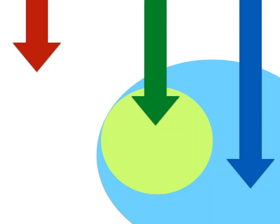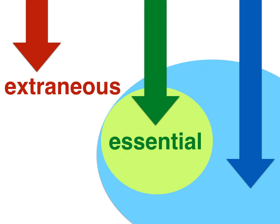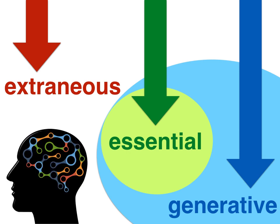Multimedia learning is based on the triarchic model of cognitive load that assumes people engage in three types of cognitive processing while learning: extraneous, essential, and generative. And these three types of processing are limited to a learner's available cognitive capacity.